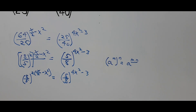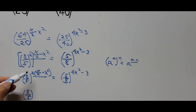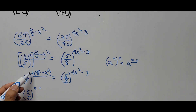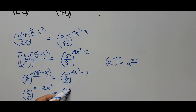Multiplying the exponents now: the left side becomes 8 over 5, to the power of — 2 times x over 2 gives x, since the 2s cancel — minus 2x squared. So the left side exponent is x minus 2x squared. The right side of the equation remains the same: 5 over 8 to the power of 4x squared minus 3.